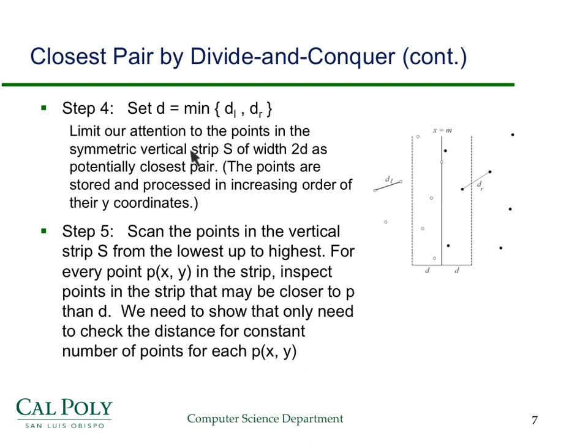We're going to have this strip 2d wide. Then we're going to scan the points from bottom to top. We'll just check for each point the points above it that are within distance d. That makes sense in terms of the y-coordinate. If the difference in y-coordinates is bigger than d, then obviously the distance between the points is going to be bigger than d. So we'll be checking in a rectangle that's 2d wide and then up d.